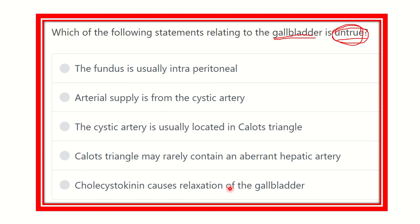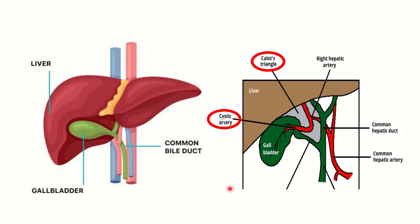Now let's see the details of the gallbladder. In the first picture, we can see the liver and two blood vessels — one is the inferior vena cava, and another is the abdominal aorta. In the lower part, we can see the common bile duct and the gallbladder. In the second picture, we can see the gallbladder, the cystic duct, and the common hepatic duct, and this triangle is the Calot's triangle.